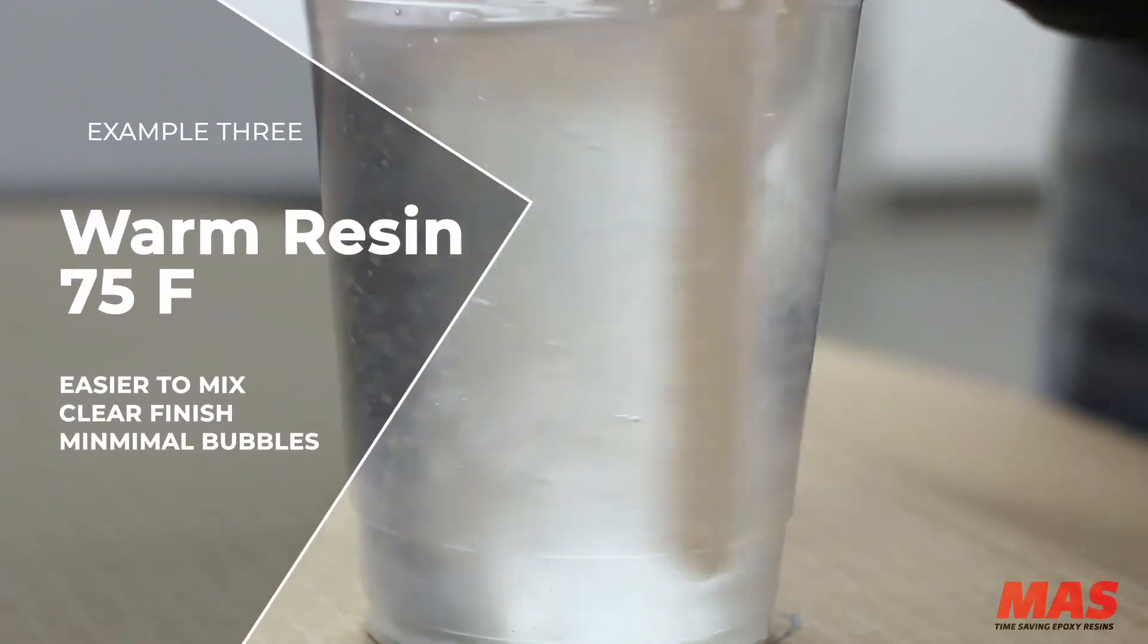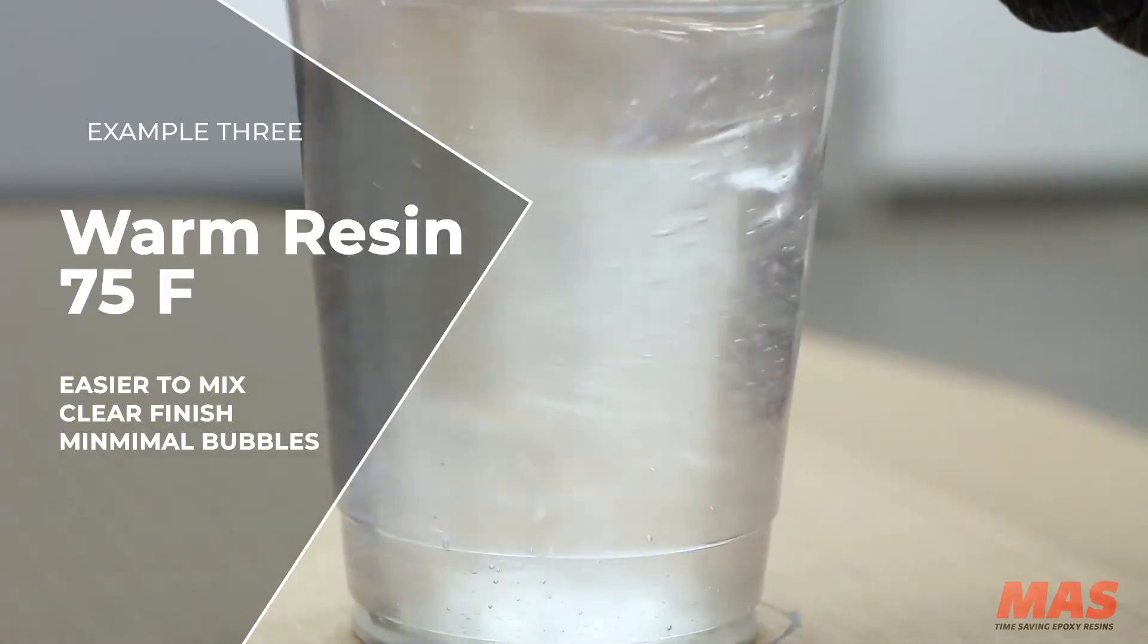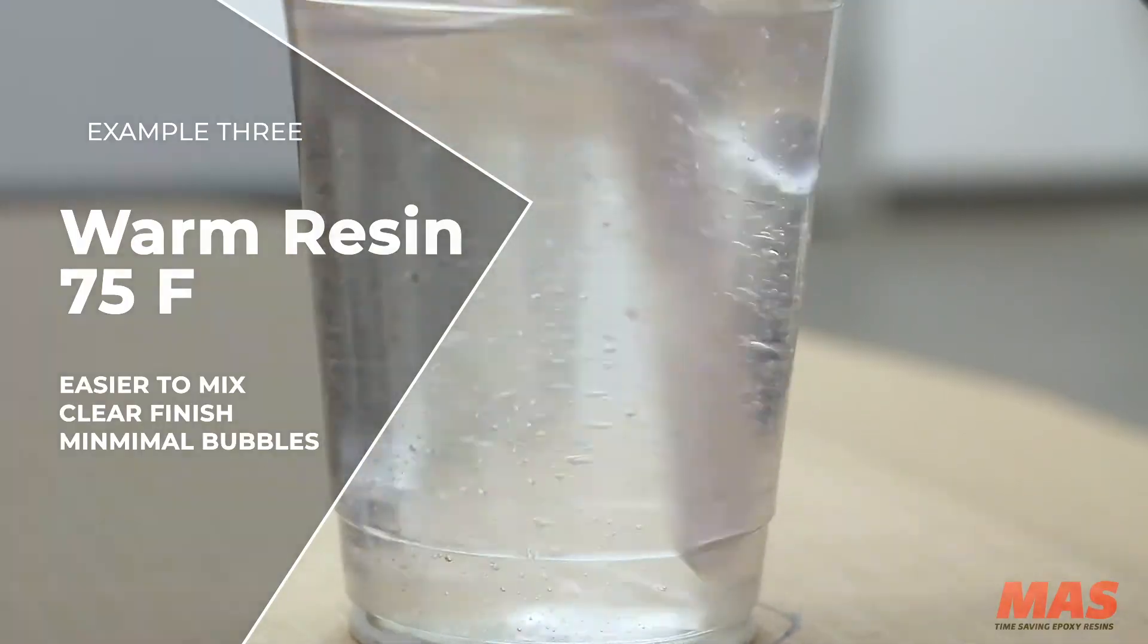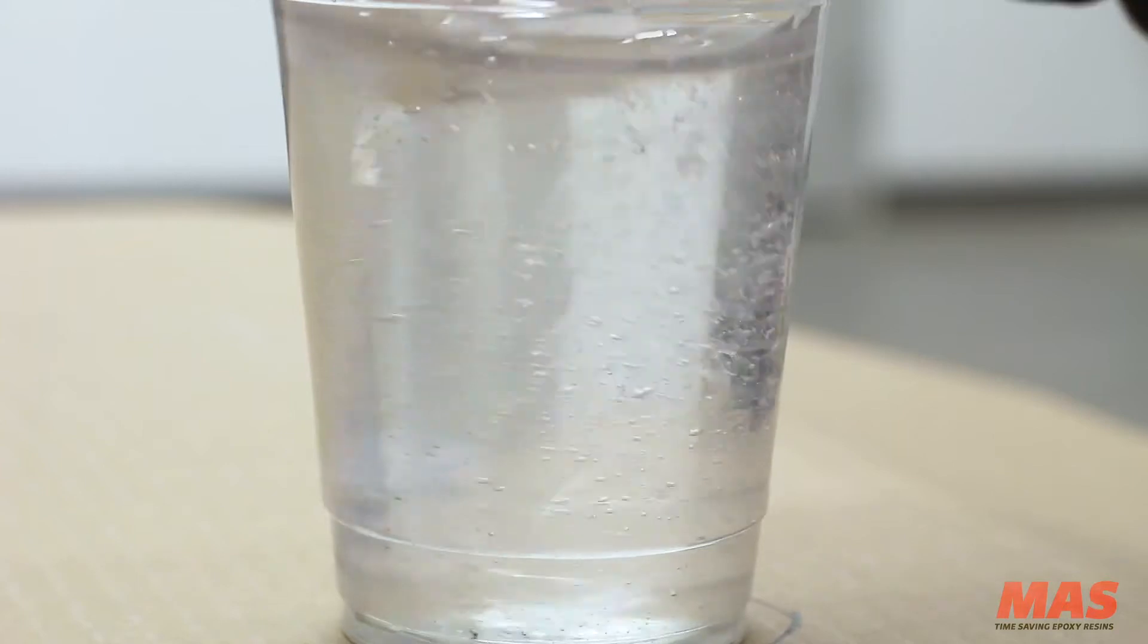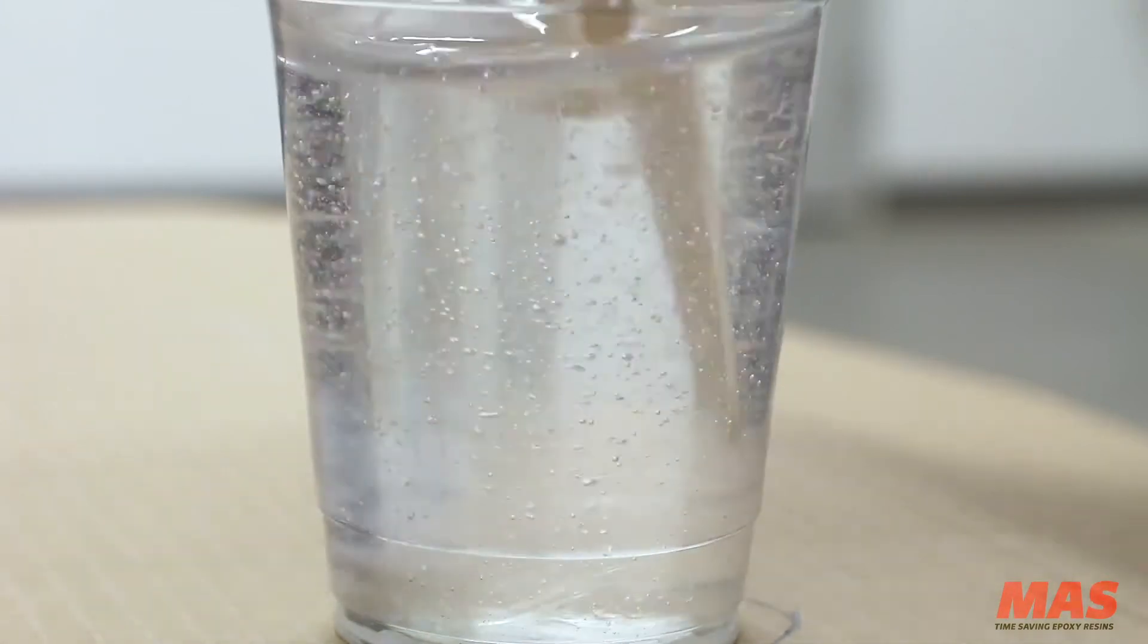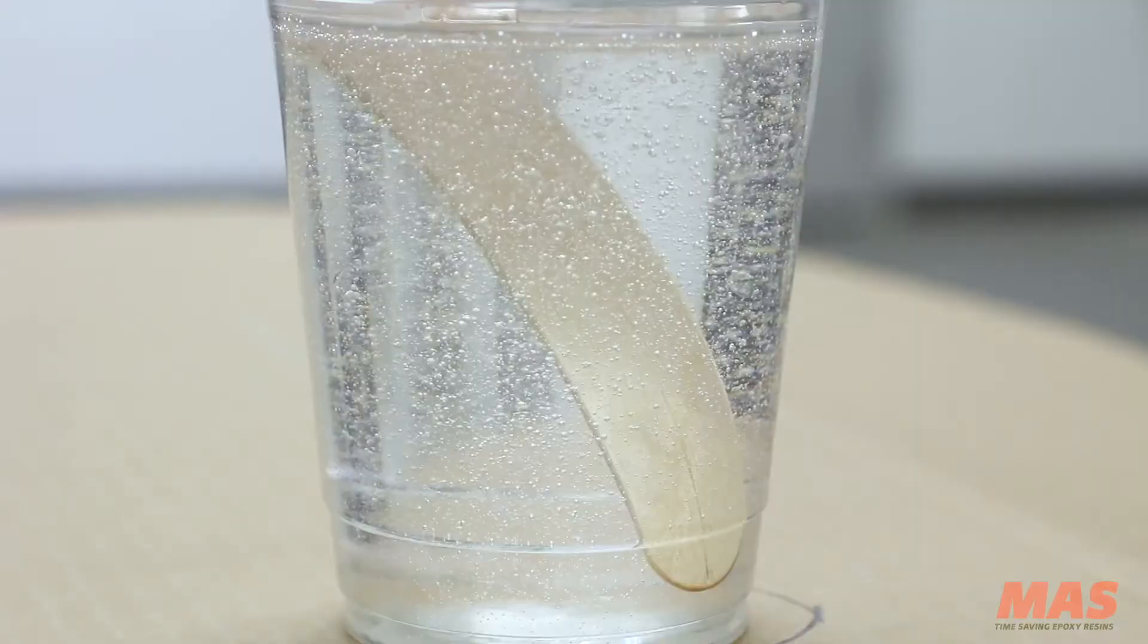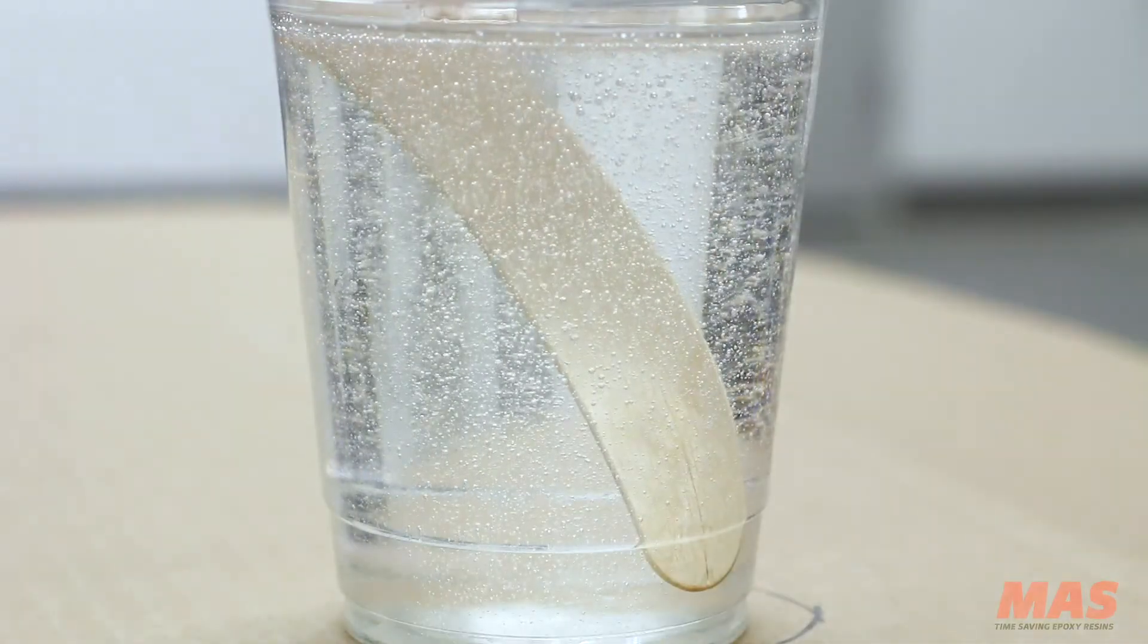Example three is optimal conditions: 75 degrees, easy to mix, clear finish, minimal bubbles. It's actually a funny story behind this—we shot this like six different ways and I kept making Derek lean over top of the table and it was crushing his back. If you get a chance, email him at Derek@epoxy.com and say 'hey man, thanks for wrecking your back, I enjoyed that mixing video'—he'll know what you're talking about.